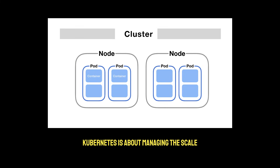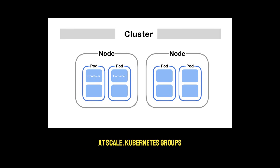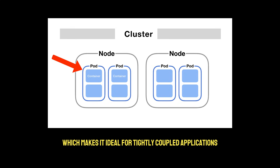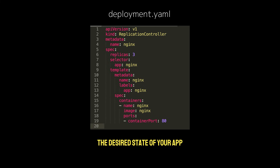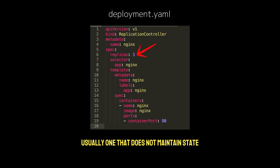Kubernetes is about managing scale. It's a powerful orchestration system for Docker containers and provides features that Docker alone cannot handle at scale. Kubernetes groups one or more Docker containers into pods — a pod is the smallest unit in Kubernetes and shares the same network and storage, making it ideal for tightly coupled applications. Kubernetes uses deployments to manage the desired state of your app, defining how many replicas of a pod should be running.